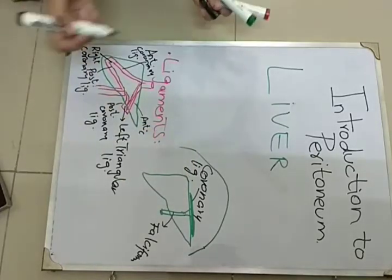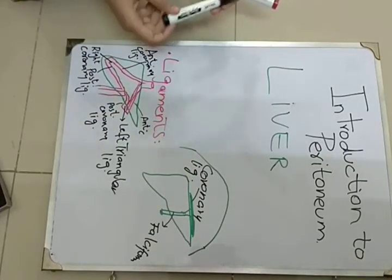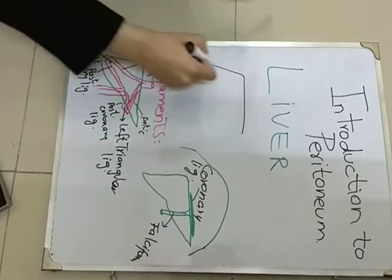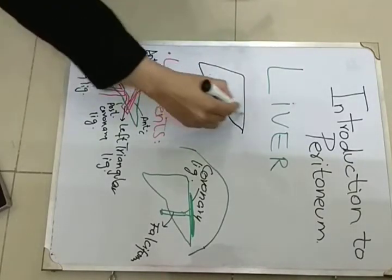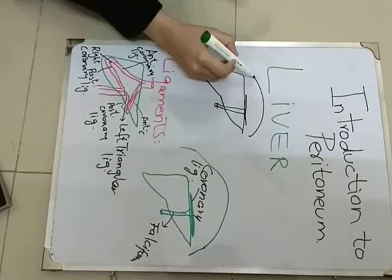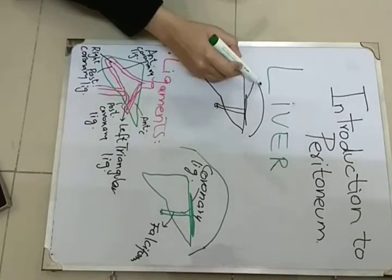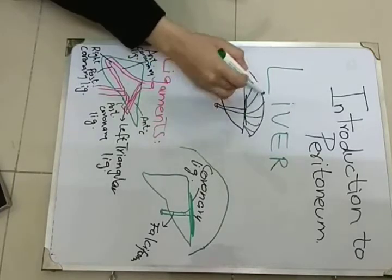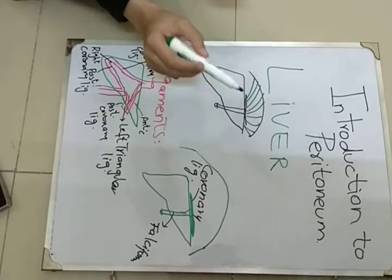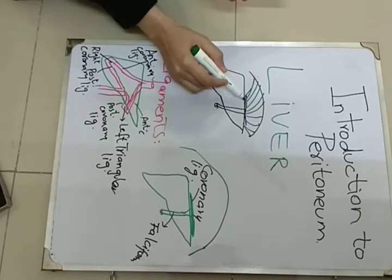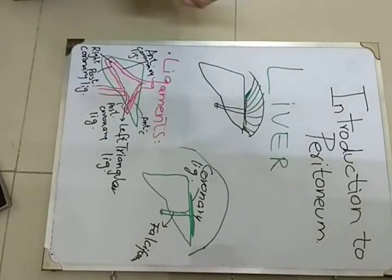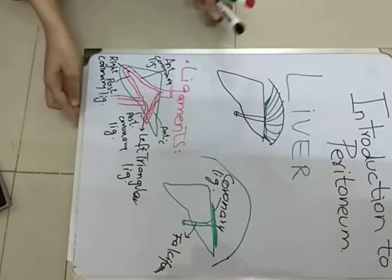And this ligament which you can see as a line is known as the coronary ligament. The coronary ligament is that ligament which joins the liver to the inferior surface of the diaphragm. The coronary ligament has a superior coronary ligament and an inferior coronary ligament. Where the superior and the inferior — or the anterior and the posterior — coronary ligaments join, they form a triangular coronary ligament, as we can see over here.